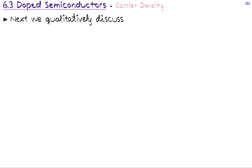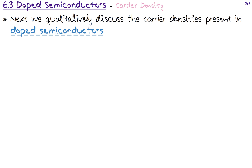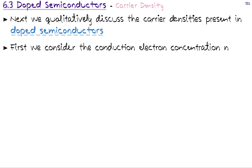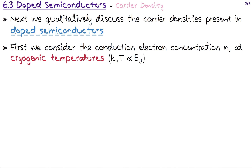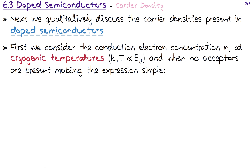We will begin by qualitatively discussing what the carrier densities are in a doped semiconductor. First we consider a conduction electron concentration n, looking at what happens when we dope the semiconductor with n-type dopants. For simplicity we consider cryogenic temperatures, meaning the kT value is far smaller than the ionization energy, and we only consider n-type doping with no acceptors present. This simplifies the expression for carrier concentration densities at the conduction band.